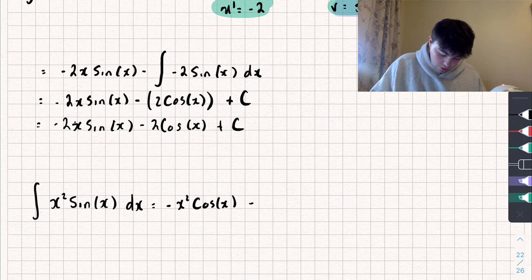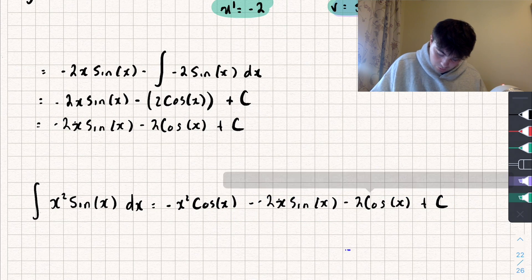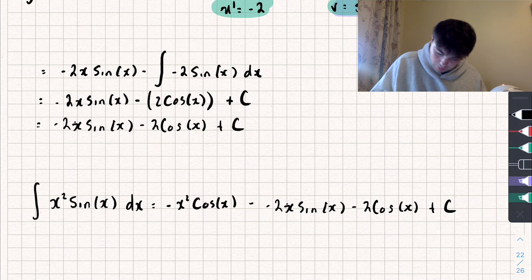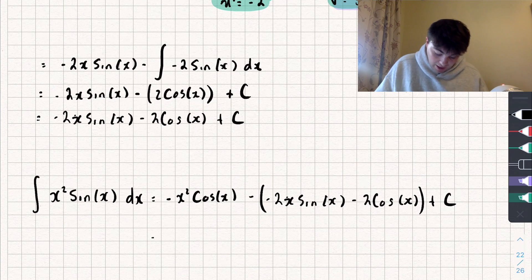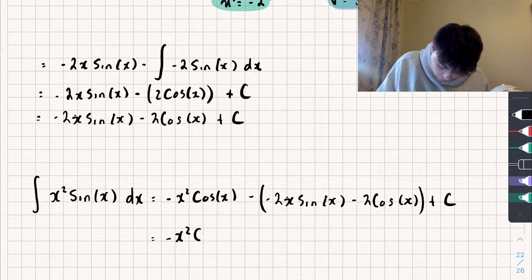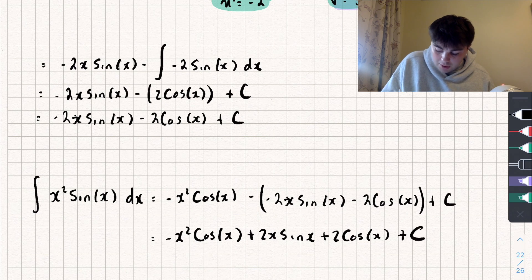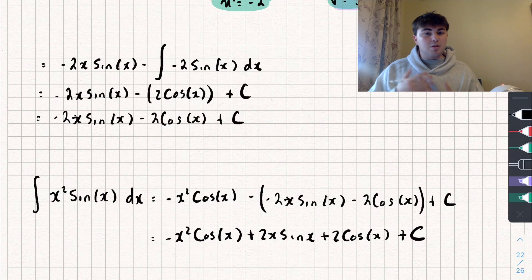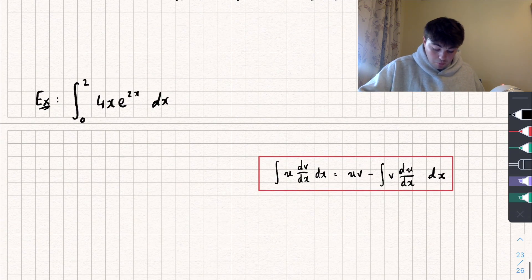Substituting back in and simplifying everything, we get that the integral is equal to negative x squared cosine of x, plus 2x sine of x, plus 2 cosine of x, plus the constant of integration c. That one was a bit trickier — integrating by parts twice is a bit more of a faff than just doing it once. Let's look at the final example.